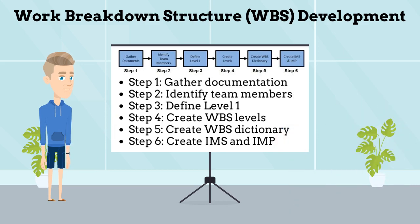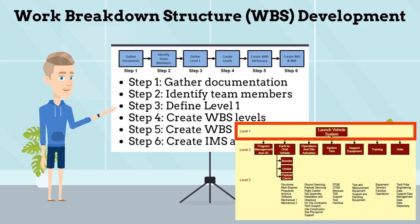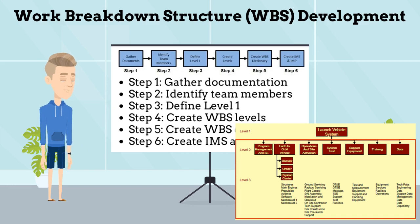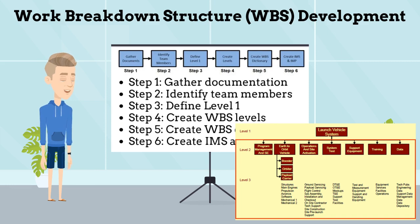Step 3 – Define WBS Level 1. This level is a summary of the deliverable that must be met to satisfy the project scope. Step 4 – Create the WBS Levels. This is the step where you break down the WBS components into discrete events. This is the most time-consuming and important step in the process.